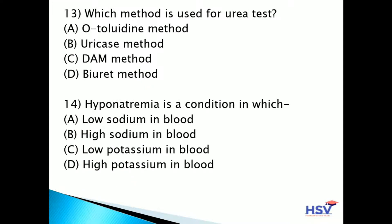Thirteenth question: which method is used for the urea test? Option A: autolidine method. Option B: uricase method. Option C: DAM method. Option D: biuret method. The answer is option C — DAM method. DAM stands for diacetyl monooxime method, which is used for urea test estimation.